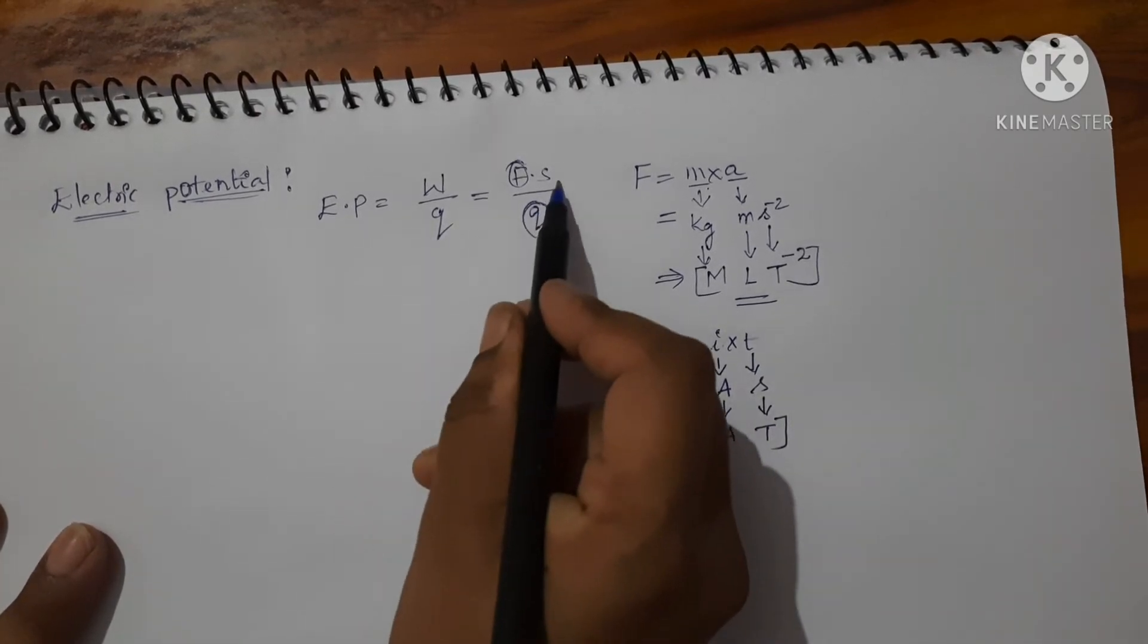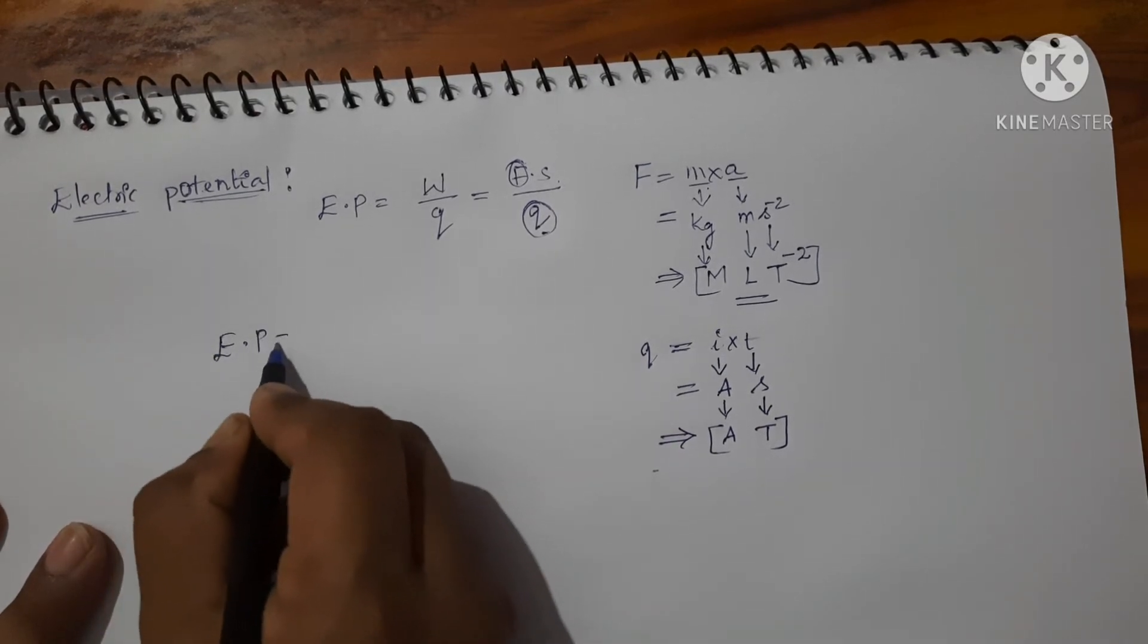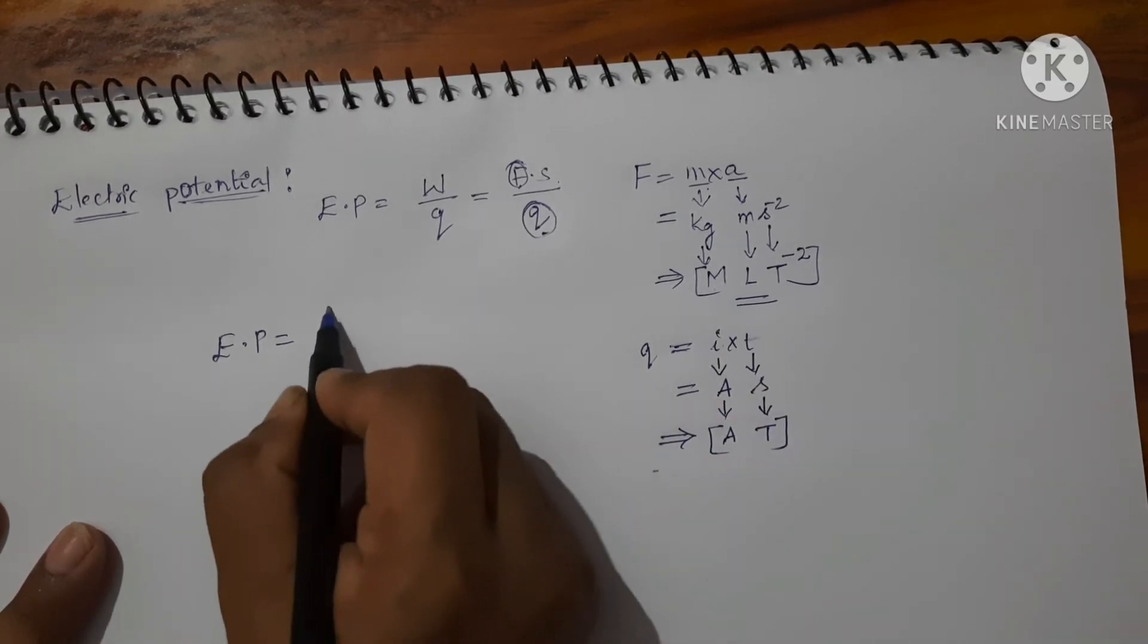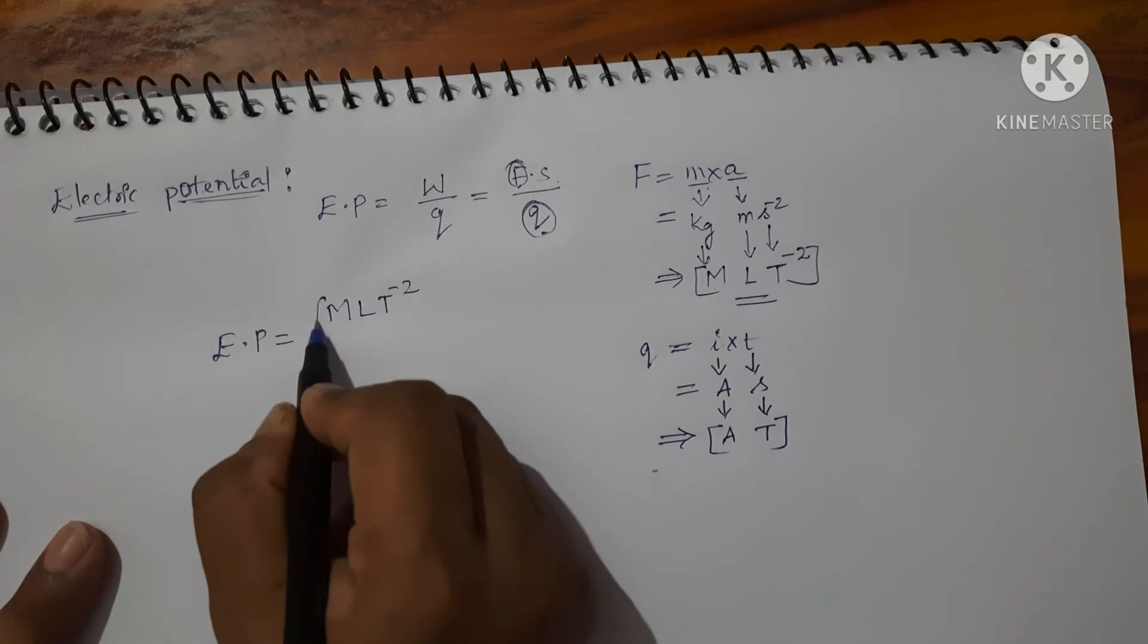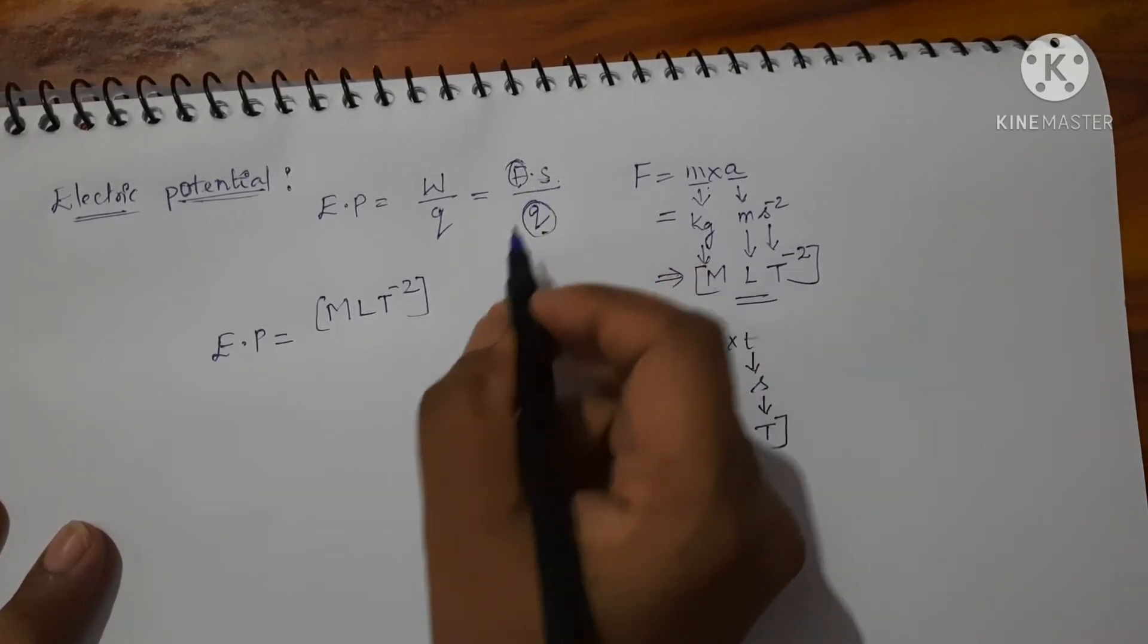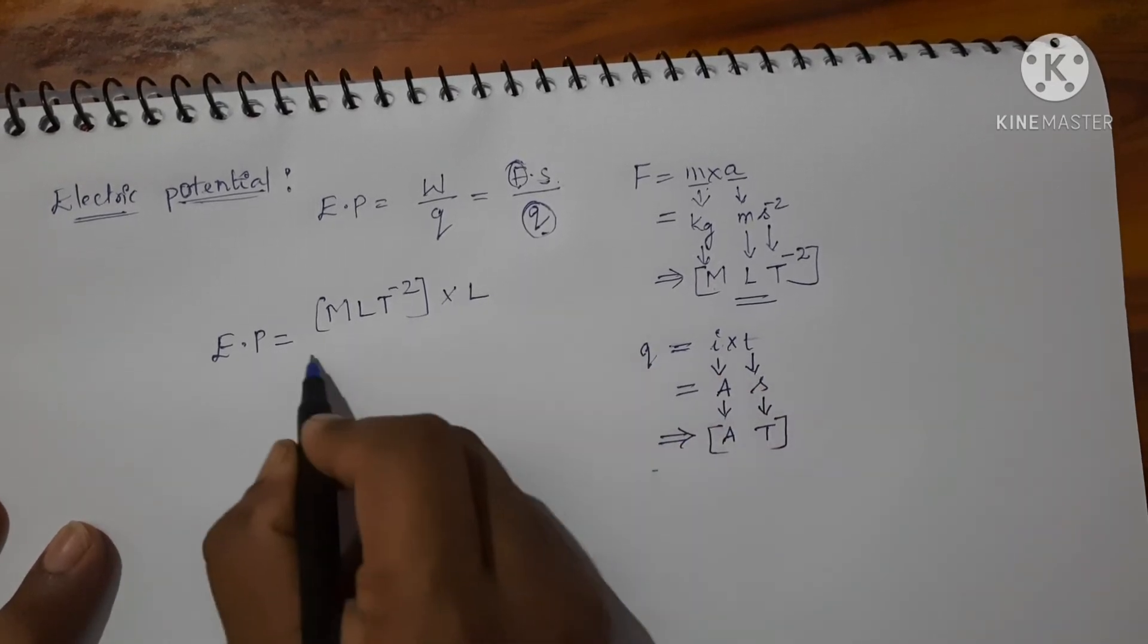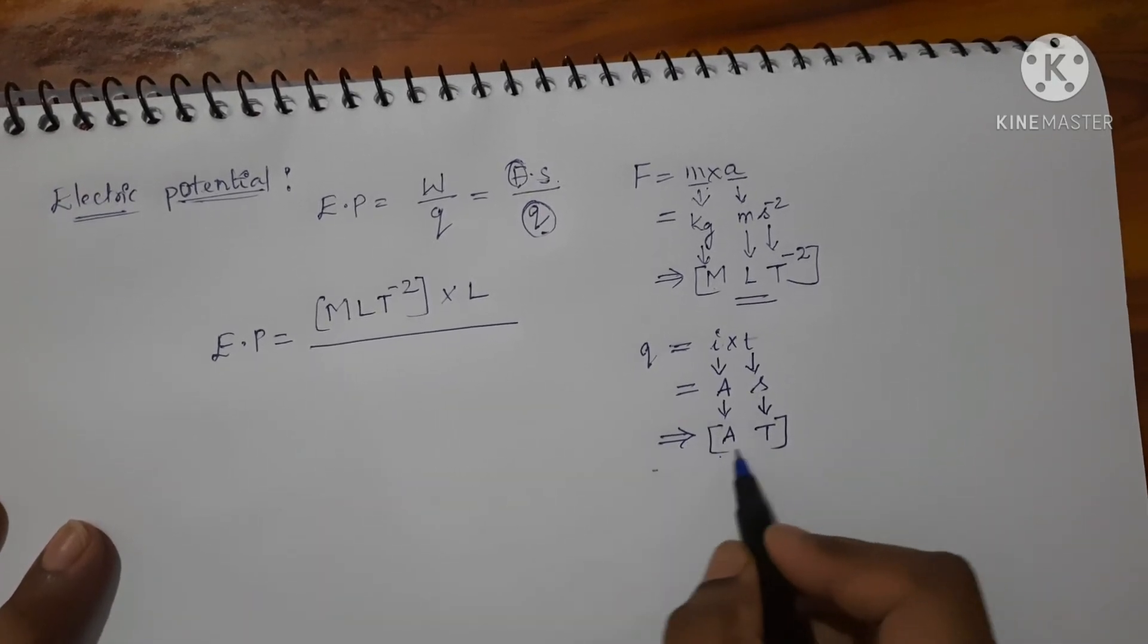Substitute this here in this equation. We will get electric potential is equal to, for force we got MLT power minus 2, into here displacement is there. Displacement is measured in terms of length upon, here for charge, AT.